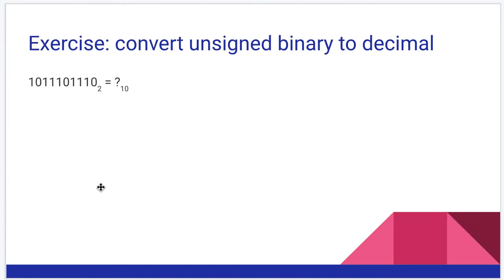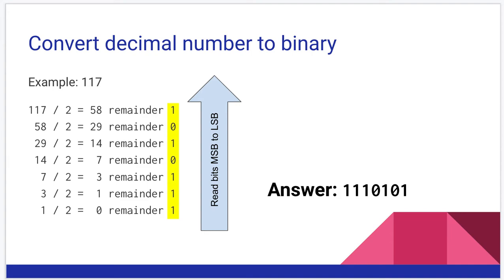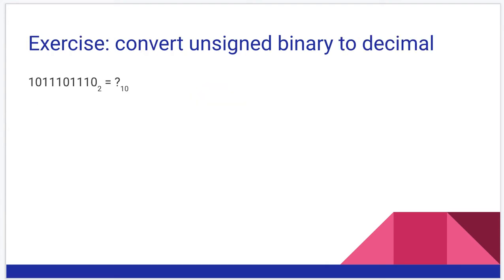I'd like you to pause right now, take a binary number, and convert it to a decimal number as an unsigned conversion. Pause, do that, and then pick back up for the answer on the next slide. I apologize — I thought I put the answer on the next slide. Work that out, check your answer with your calculator, and move on.